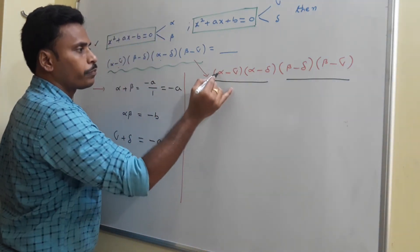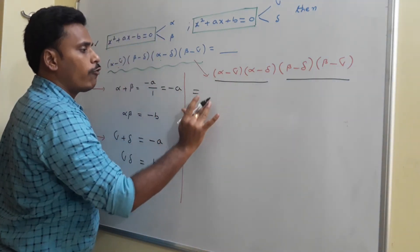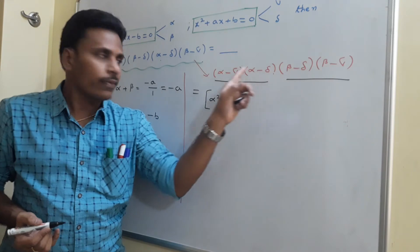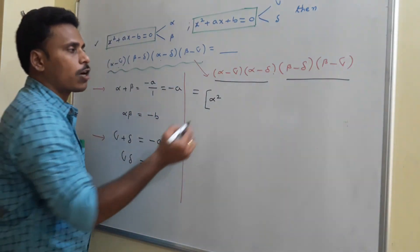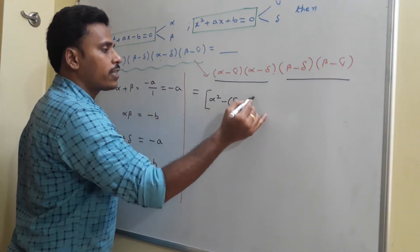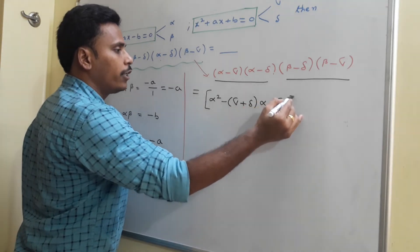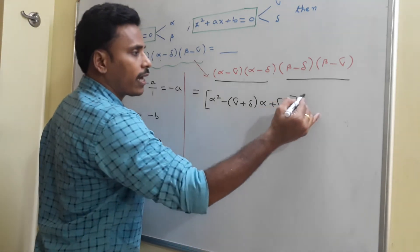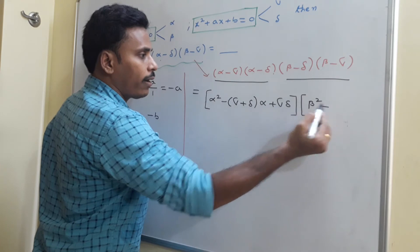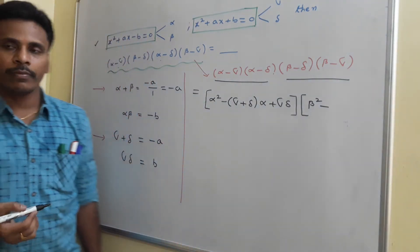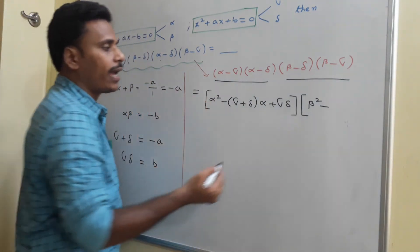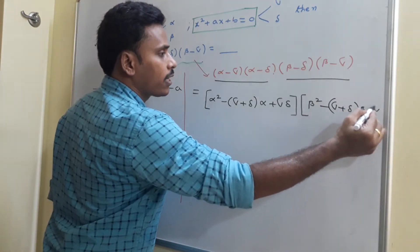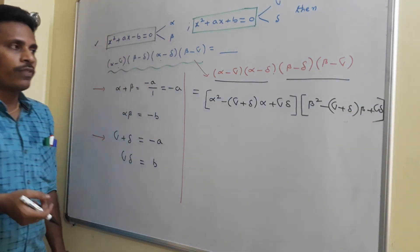Multiplying the first pair: alpha times alpha is alpha², and alpha times delta plus gamma times alpha gives alpha(gamma+delta) plus gamma·delta. Multiplying the second pair: beta times beta is beta², and beta times gamma plus beta times delta gives beta(gamma+delta) plus gamma·delta.